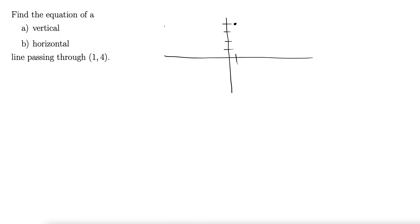Okay, so a vertical line, remember a vertical line is of the form x equals c, or c is some constant. A horizontal line is of the form y equals c, or c is a constant. Okay, they don't necessarily have to be the same constant.